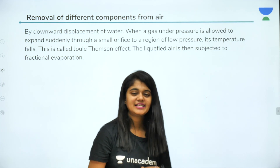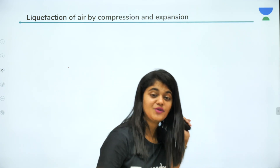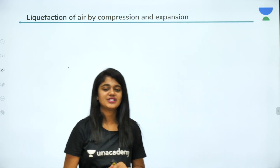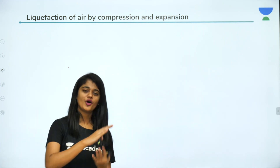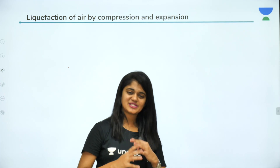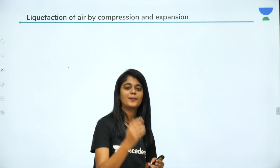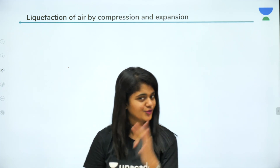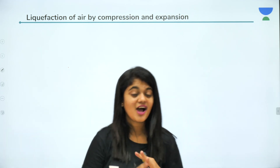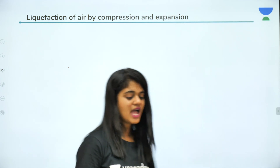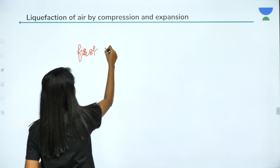The liquefied air obtained is subjected further to fractional evaporation. Now, liquefaction of air is done by compression and expansion. The purified air — with all other gas components removed — is first compressed and then allowed to expand suddenly.